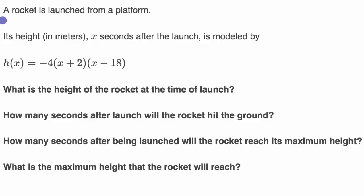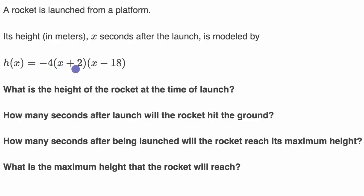We are told a rocket is launched from a platform. Its height in meters, x seconds after the launch, is modeled by h of x equals negative four times x plus two times x minus 18.